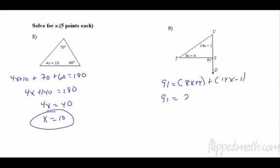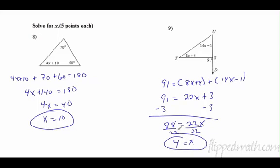So now we have 8x plus 14x is 22x, and 4 minus 1 is 3. Subtract 3. 88 equals 22x. Divide by 22, and x equals 4.